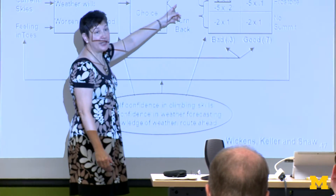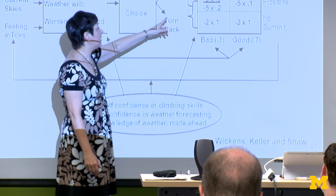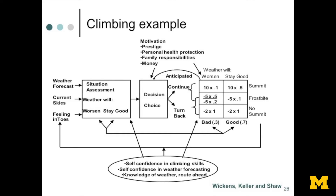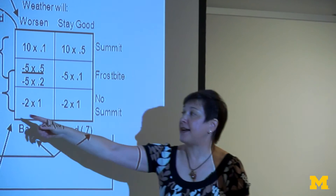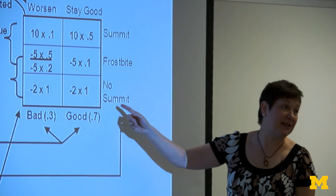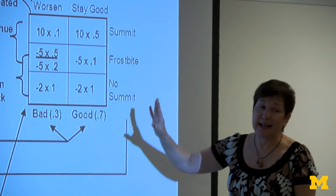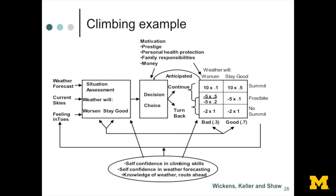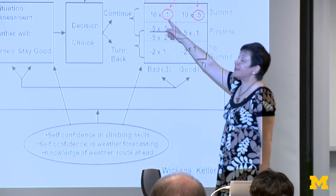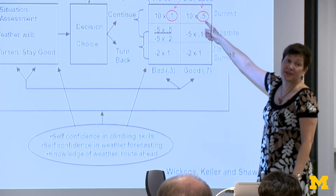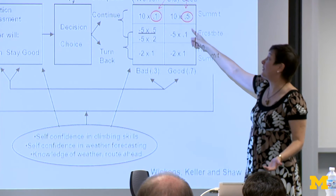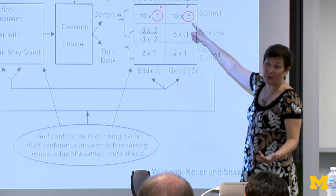You have a choice: should you continue climbing, or go back? If you decide to continue, two things might happen — you could reach the summit, or you might get frostbite. If you decide to turn back, you certainly won't summit, but you might still get frostbite. That's all a function of what actually happens with the weather. If the weather worsens, the likelihood of summiting is smaller than if weather stays good. Even with good weather, other factors influence whether you actually reach the summit.